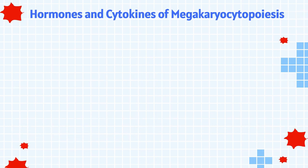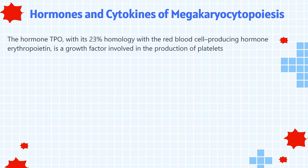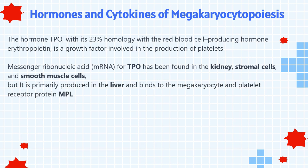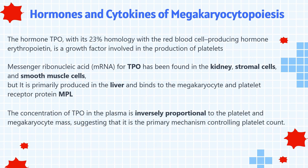The hormone thrombopoietin, with its 23% homology with the red blood cell producing hormone erythropoietin, is a growth factor involved in the production of platelets. mRNA for thrombopoietin has been found in the kidney, stromal cells, and smooth muscle cells, but it is primarily produced in the liver and binds to the megakaryocyte and platelet receptor protein MPL. The concentration of thrombopoietin in the plasma is inversely proportional to the platelet and megakaryocyte mass, suggesting that it is the primary mechanism controlling platelet count.